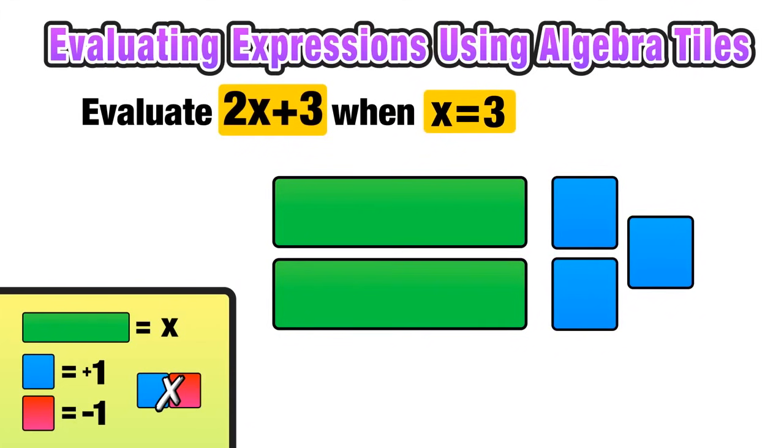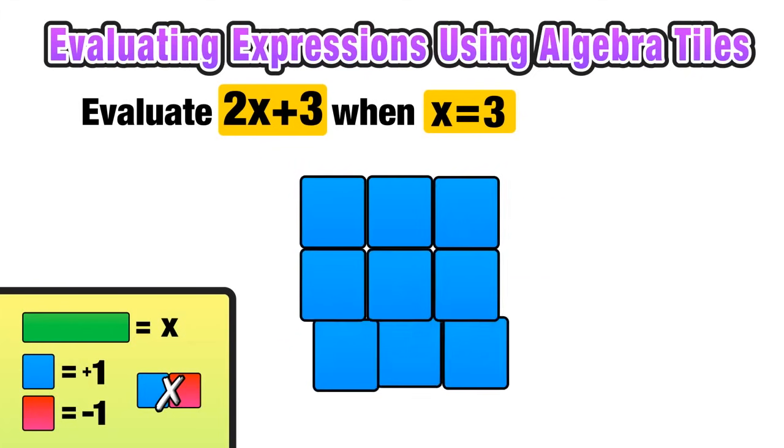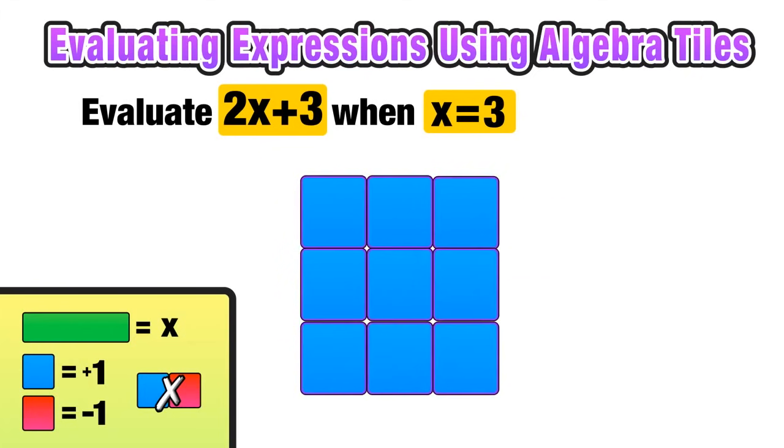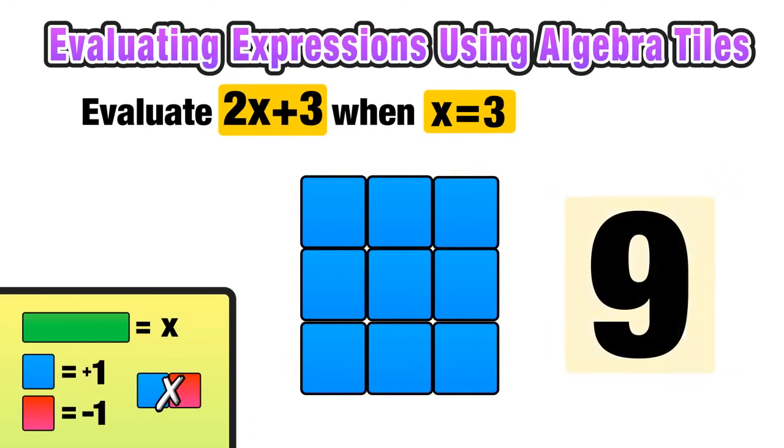The next step is to evaluate this expression for when x is equal to 3. So I have to replace each x with a value of 3, in this case with 3 blue squares, and I have to do this for both x values. So I'm replacing each green rectangle with 3 blue squares. So now all we have to do is combine the remaining algebra tiles, which is positive 9, and we can say that 2x plus 3 equals 9 when x is equal to 3.